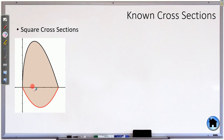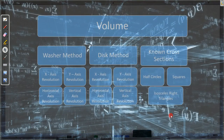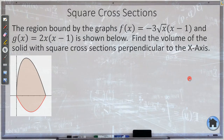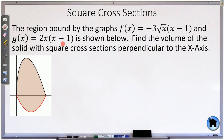These shapes are even weirder, so it gets really hard to visualize what they look like — you just kind of have to do the math. Let's start with squares. We're going to take the region bound by f and g and find the volume of a solid with square cross sections perpendicular to the x-axis. When I draw my square, it needs to be perpendicular to the x-axis, so I'm going to turn that distance into a square.